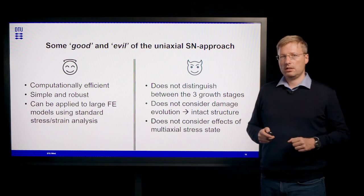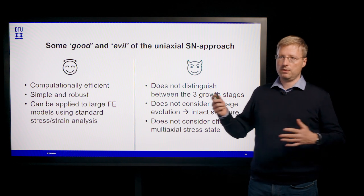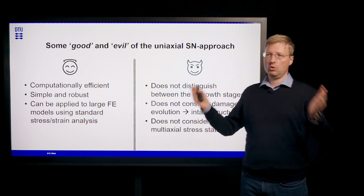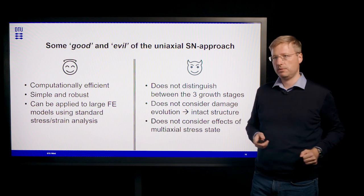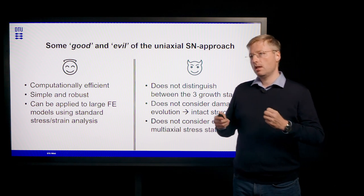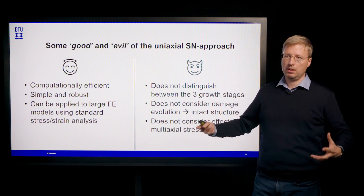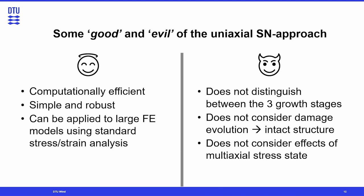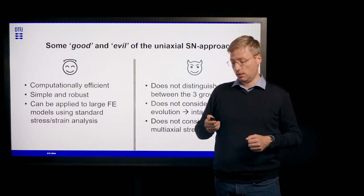The disadvantages, on the other hand, are that the SN approach does not distinguish between the three growth stages discussed earlier — it only sees the final point of failure without knowing what happened in the history leading to that failure. It also does not consider damage evolution, meaning the degradation or softening of the material in the structure; we are only looking at stresses and strains of the intact structure. Thirdly, it does not consider the effects of multi-axial stress states — the other stress components acting simultaneously produce a cocktail effect that cannot be considered in the uniaxial SN approach.